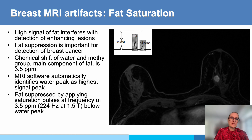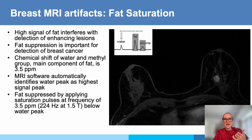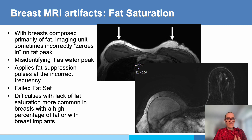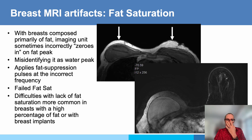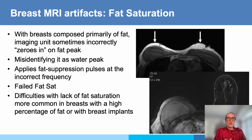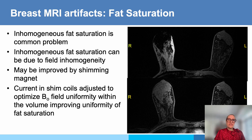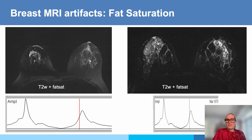The most important technical issue is inadequate fat suppression. The MRI software automatically identifies the water peak as the highest signal, but if fat is predominant in the breast it can happen that the wrong peak is identified. The technologist will identify this and can correct it by manually selecting the peak — this is especially pronounced when one breast has an implant and the other is normal glandular tissue. Inhomogeneous fat suppression is a common problem but can be improved by shimming the magnet; shim coils adjusted to optimize B0 field uniformity within the volume improve fat saturation uniformity.